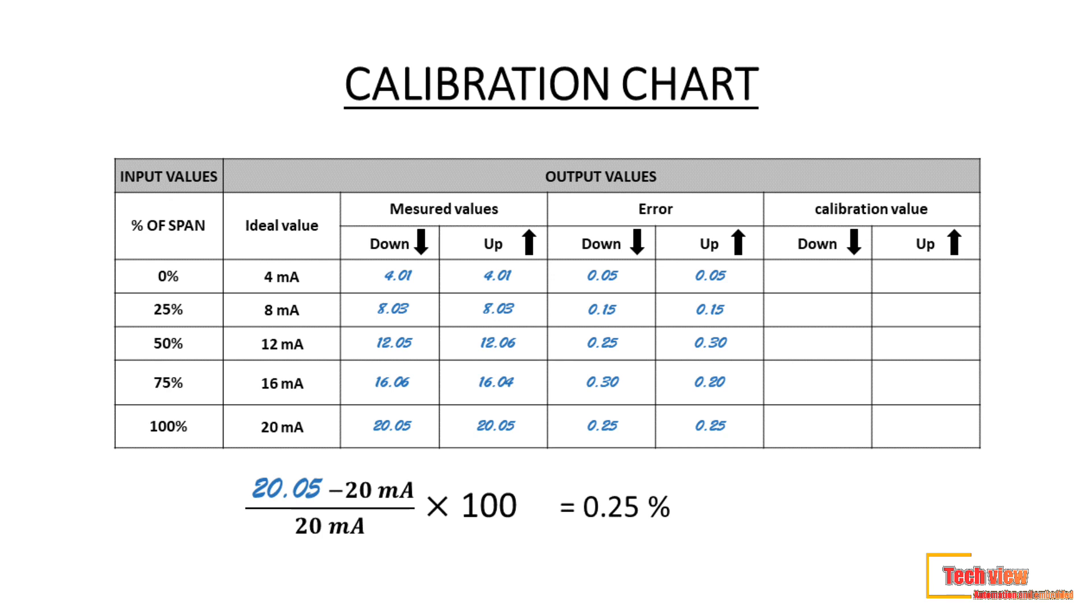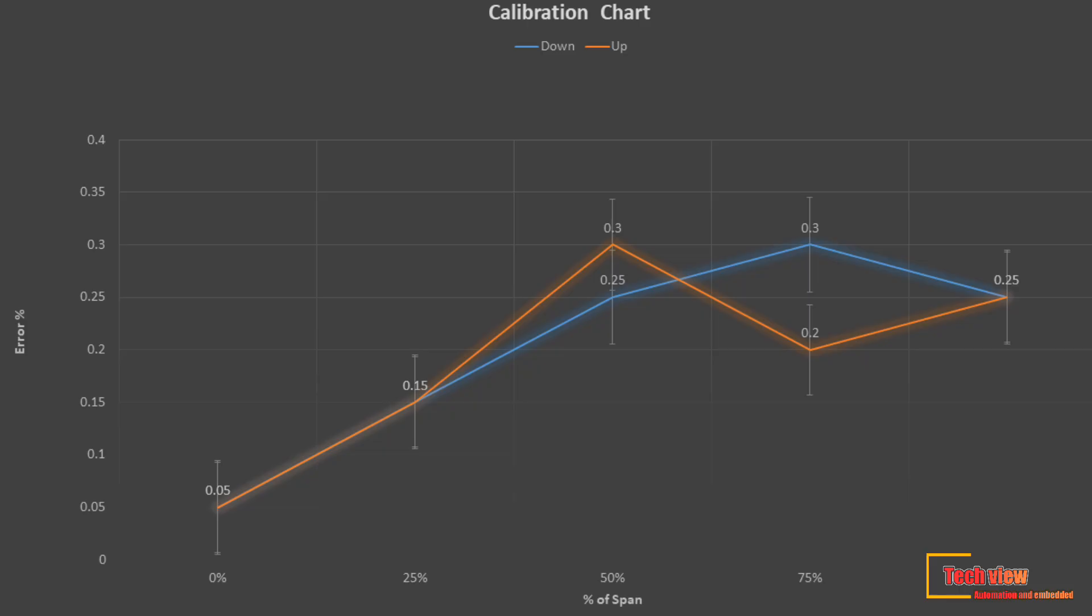For example, let's assume the maximum tolerance is 0.5%. Using the data from the calibration chart, we can see that the deviations all are less than the deviation allowed 0.5%. Therefore, no additional calibration is required.